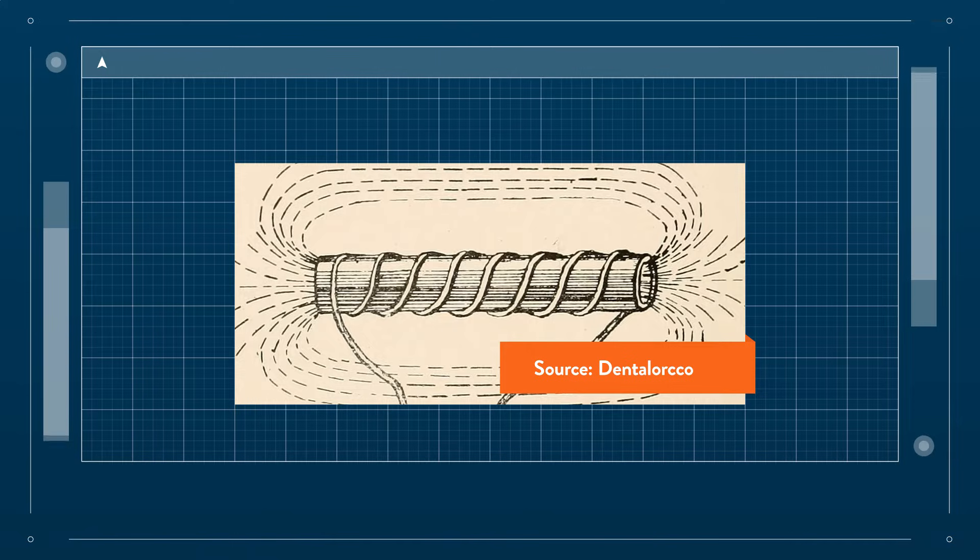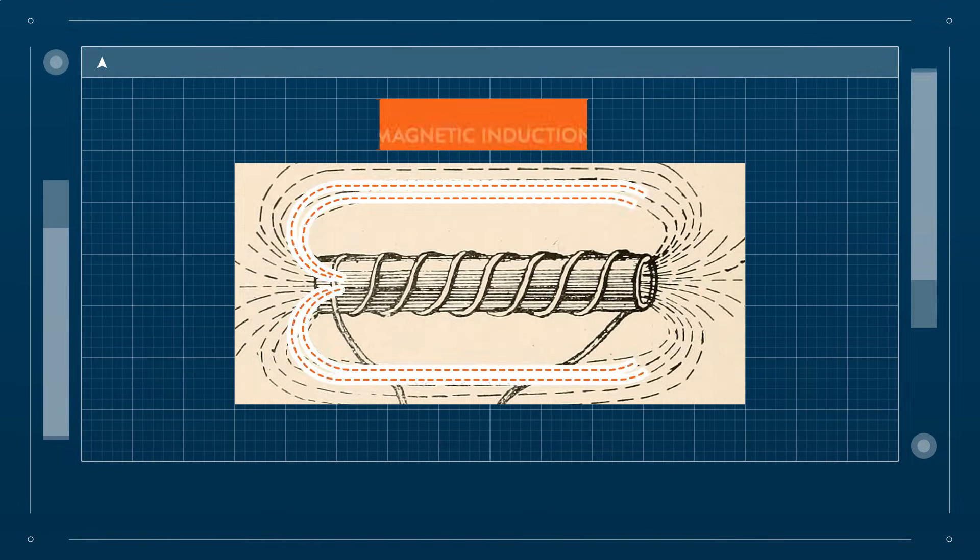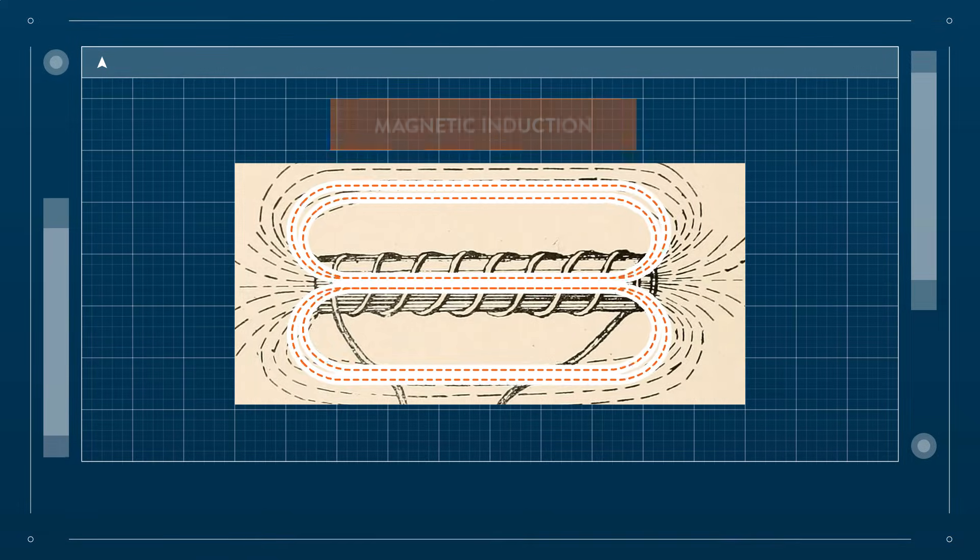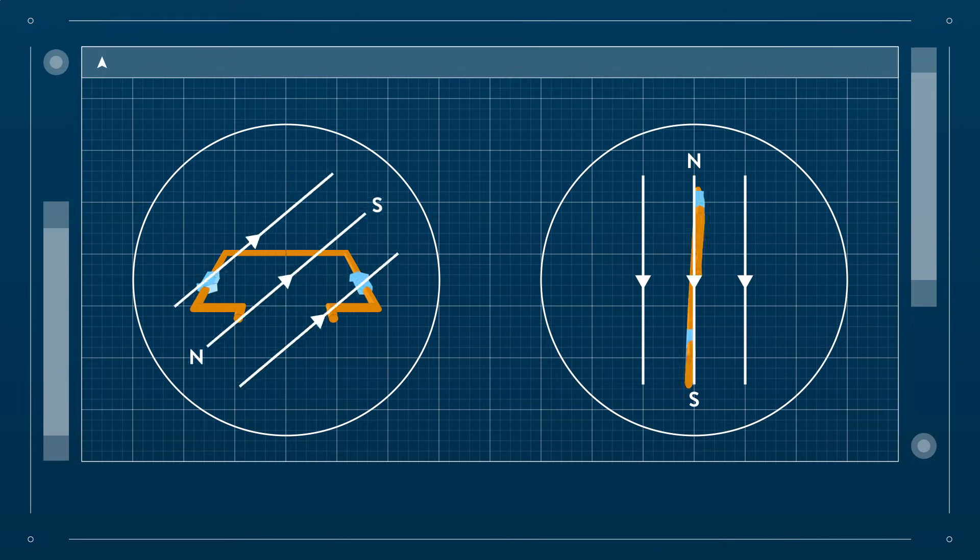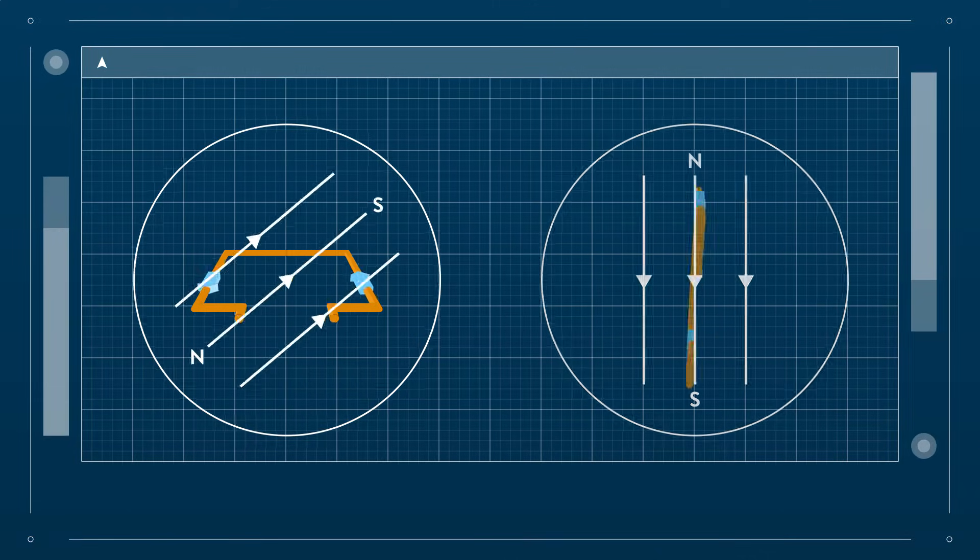The physical phenomenon on which the generators rely is magnetic induction. Induction in the form of voltage occurs when either a conducting coil is placed in a changing magnetic field, or when the coil moves around in a magnetic field. Most wind turbines use the first approach.